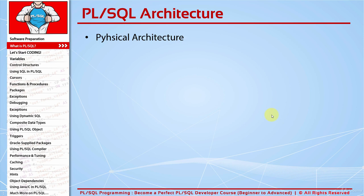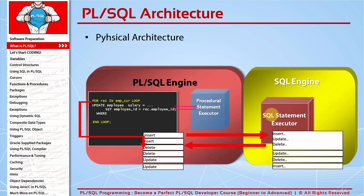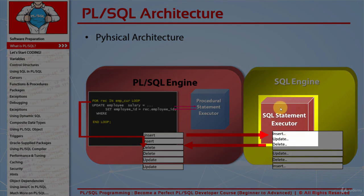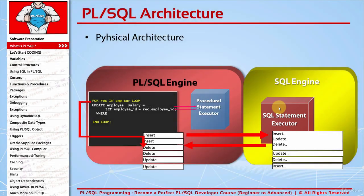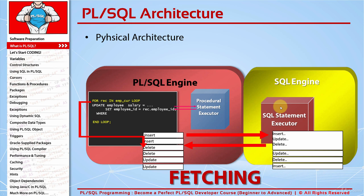Let's remember our previous PL/SQL engine schema first. In Oracle database, there is an SQL engine that operates your SQL queries and returns data to the client. In this engine, there is a SQL statement executor which operates your queries. When you write your SQL query, it does not run directly. There are some operations before your query is interpreted. When we run our query, it steps into three main processes: parsing, fetching, and executing. This operation is done by the SQL engine.